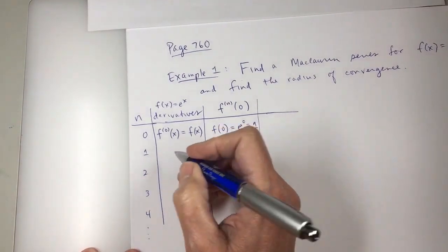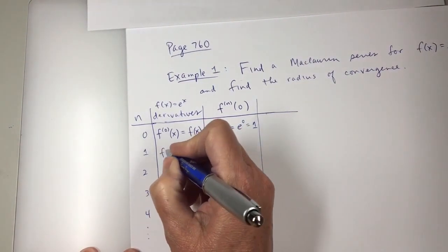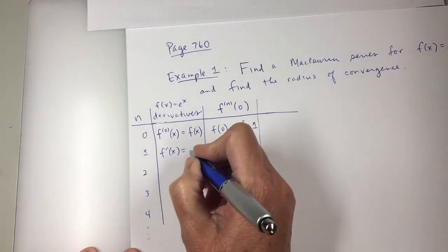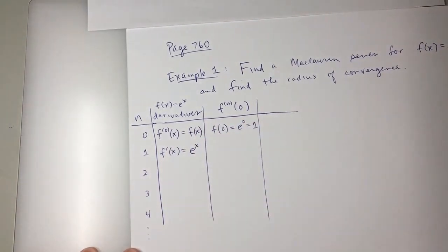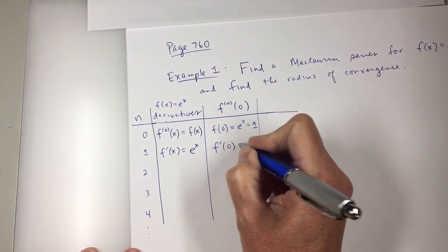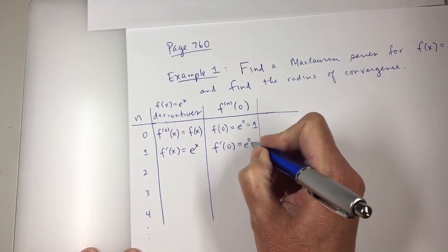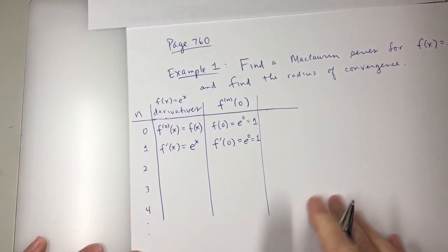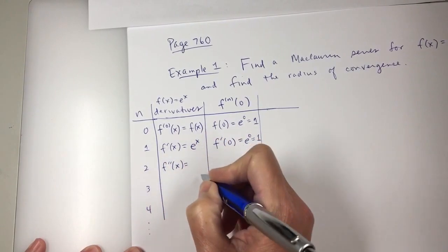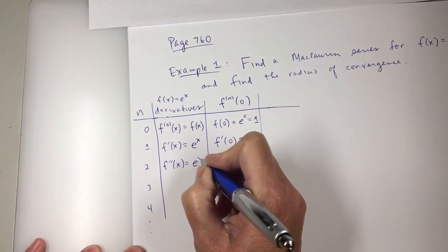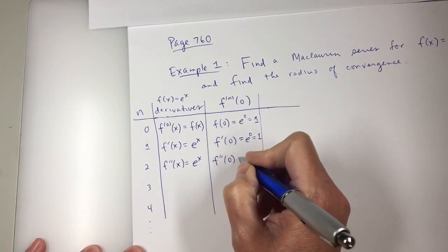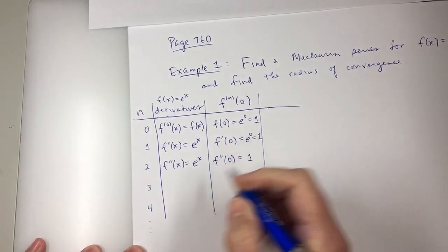Then the first derivative is what? e to the x. So f prime at zero is e to the zero. That's 1. f double prime at x is what? e to the x. So f double prime at zero is 1.